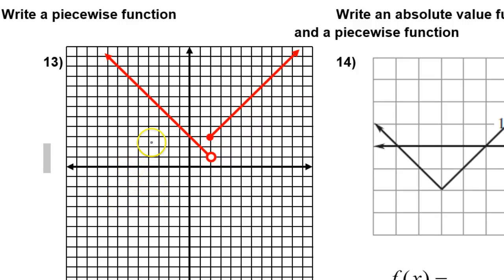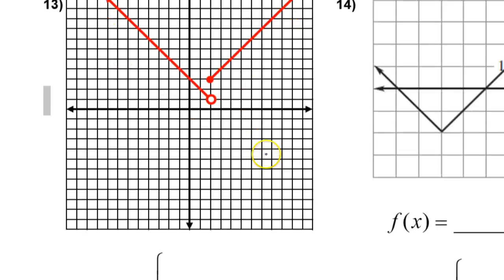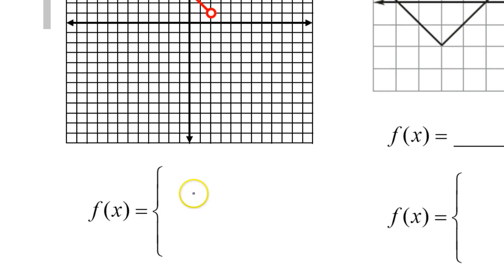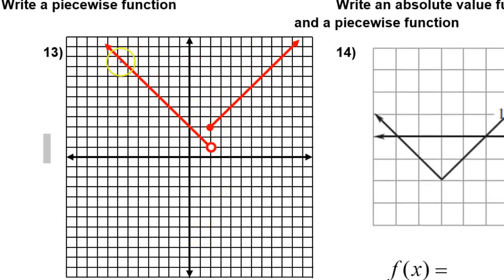In this video, we're going to learn how to write a piecewise function if you're given the graph of a piecewise function. When you're writing a piecewise function, you know you're going to have an equation for each part. I'm going to work from left to right, starting with the portion of the graph I'm colorizing in blue, so you can more easily follow what I'm doing.